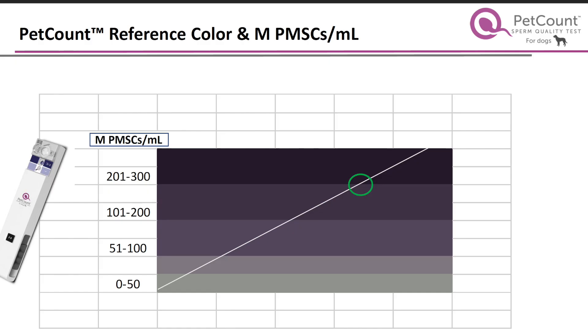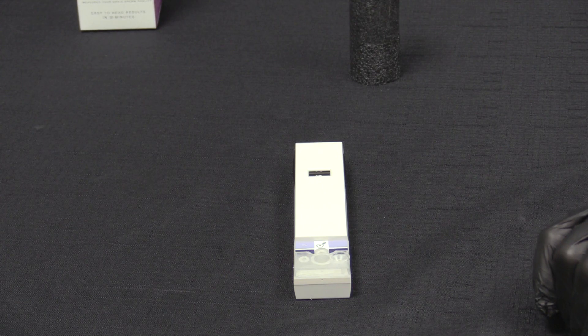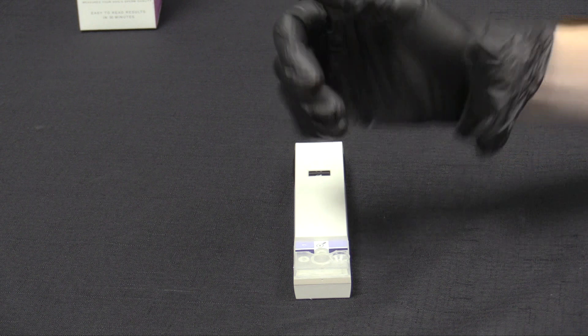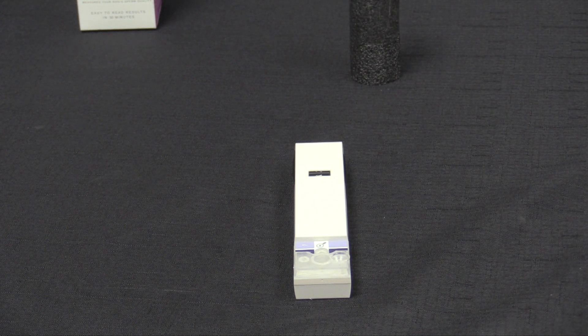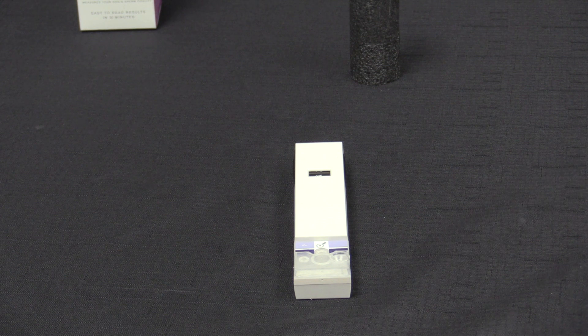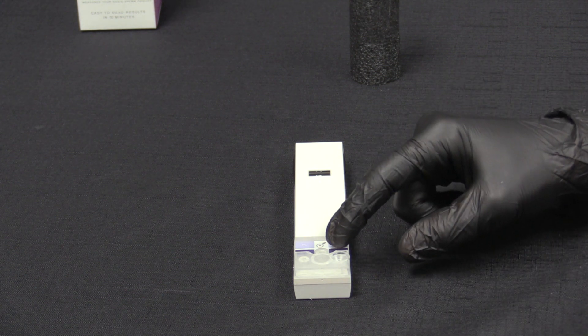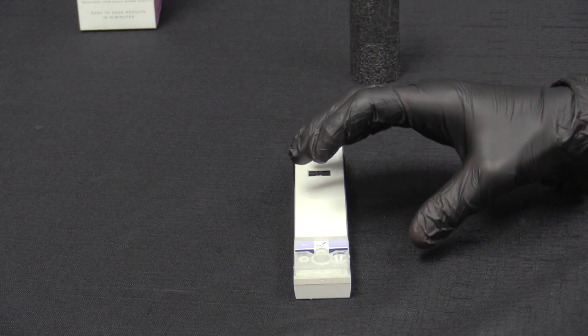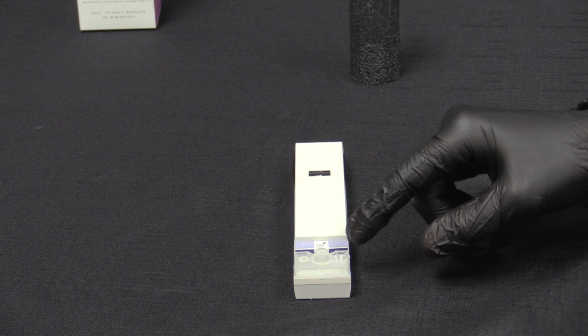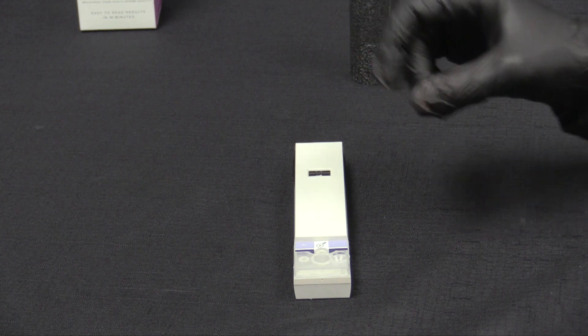Remember that the darker the purple the more PMSCs are in the sample and the lighter the purple the less amount there will be. Be careful ensure that you've slid the bar back within about 30 minutes after having deposited the semen into the sample well to maintain test validity. Also be sure to interpret the test color result within five minutes after having pulled the slider back. The valid result will be within five minutes of pulling that slider back.